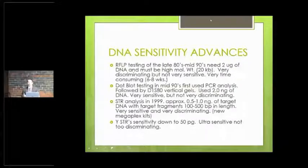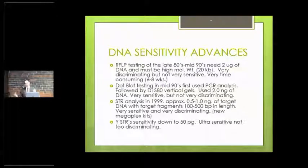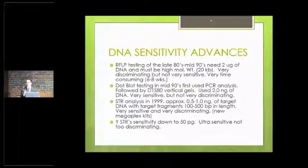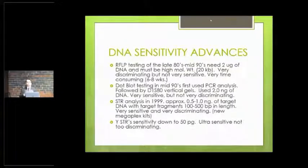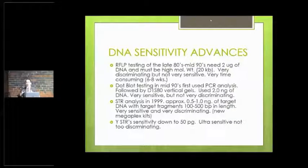The other thing is turnaround time. In the RFLP days, we used autoradiograms and radioactive probes. It took about six to eight weeks just to run a single sample back then. That's late 80s, early 90s. Into the 90s, we switched to what's called PCR technology, and this is where we really had the dramatic mushrooming of the type of testing that we could do.